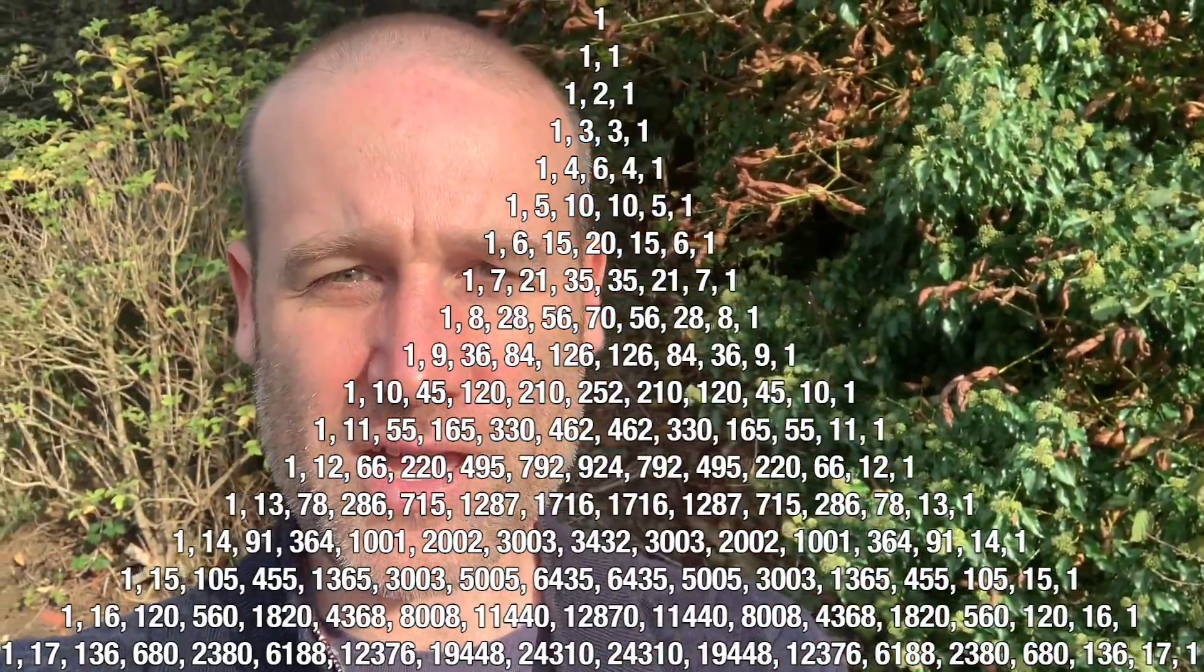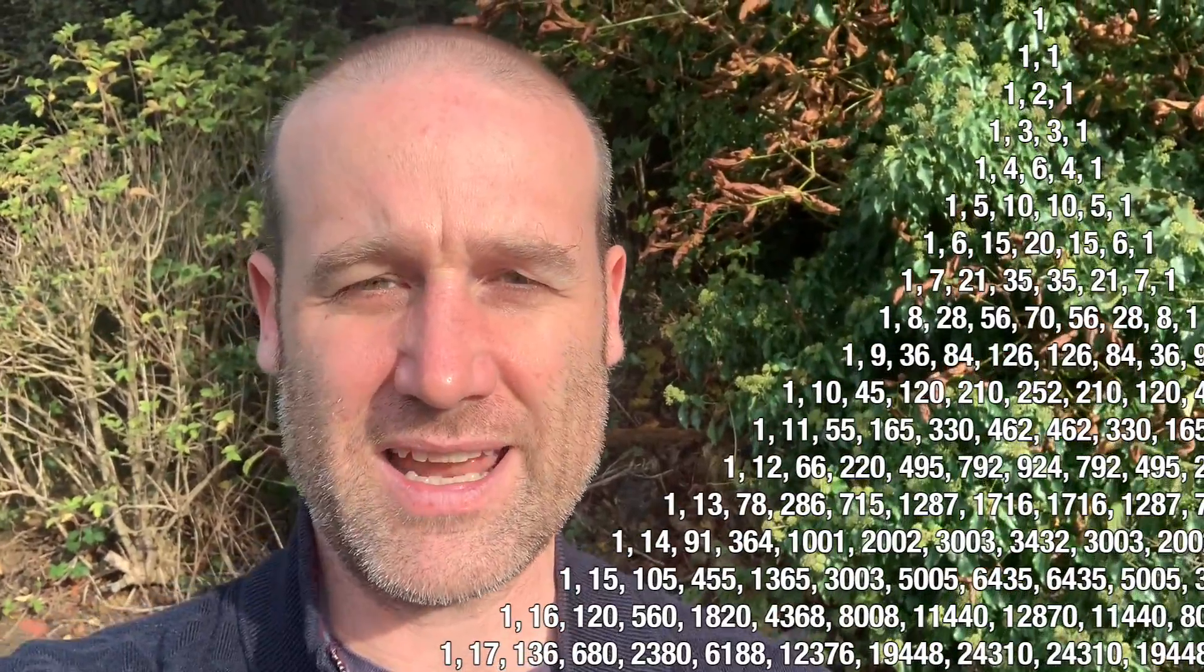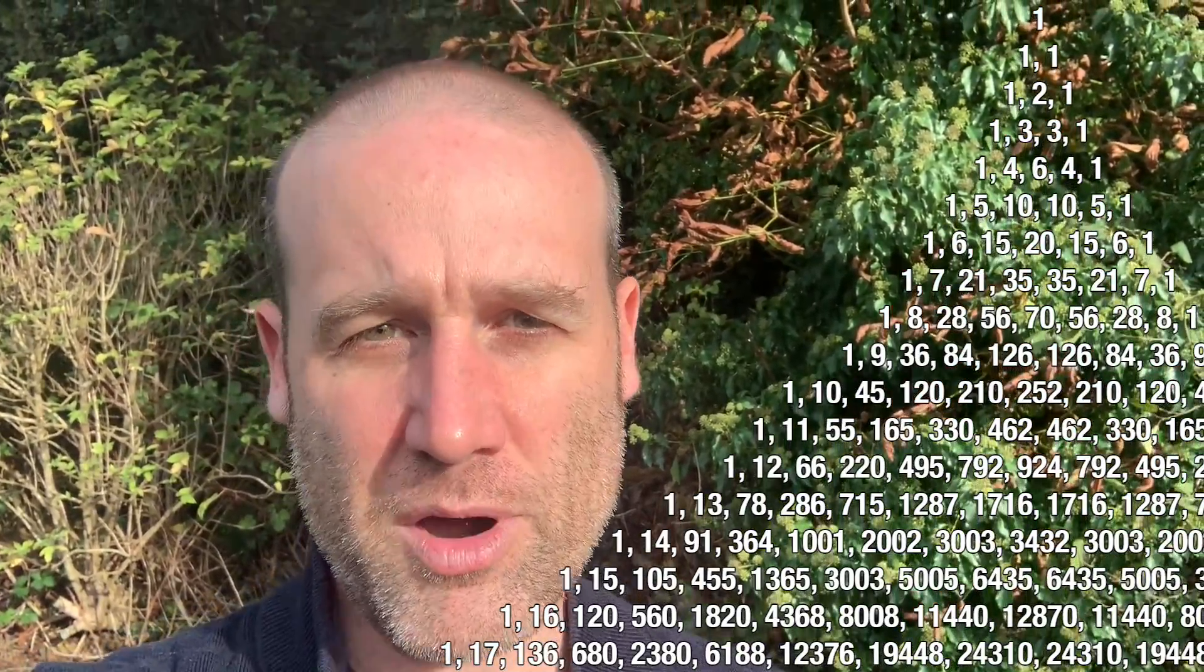For now, Pascal's Triangle. This is where you add the two numbers above each position to get the new number you fill in underneath, and you assume that the triangle is in an infinite ocean of zeros, which is why you get the ones all the way down both sides.